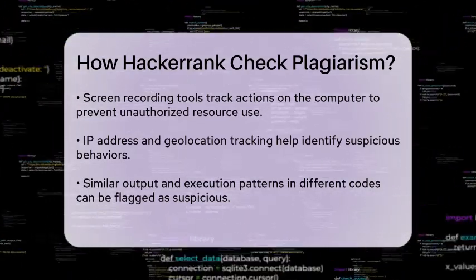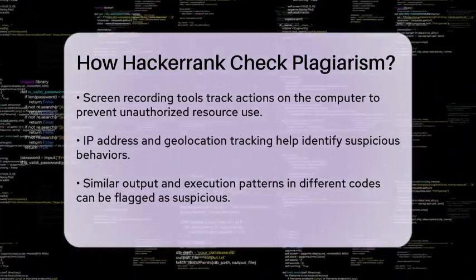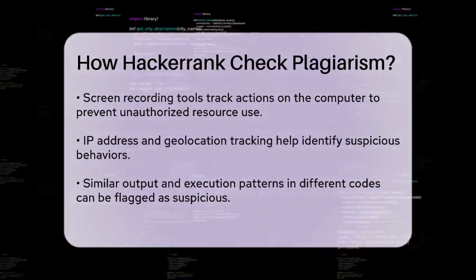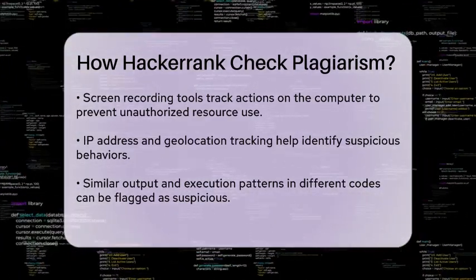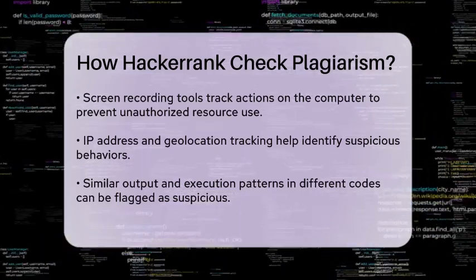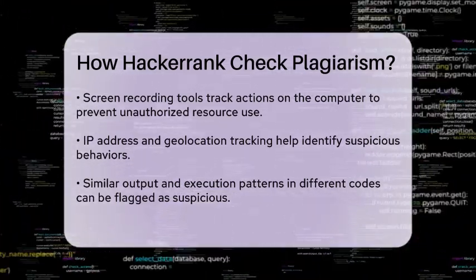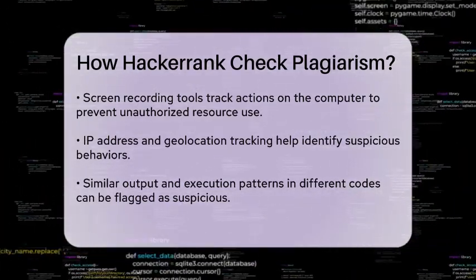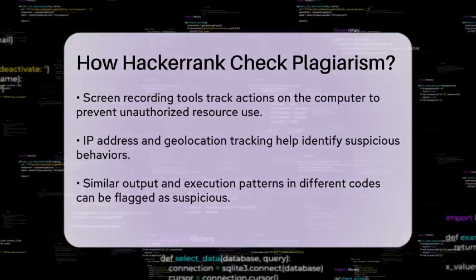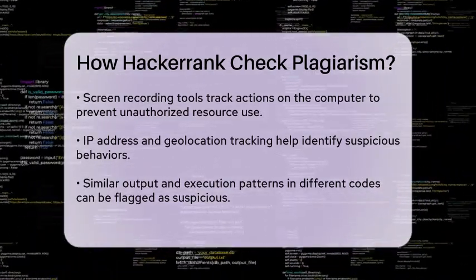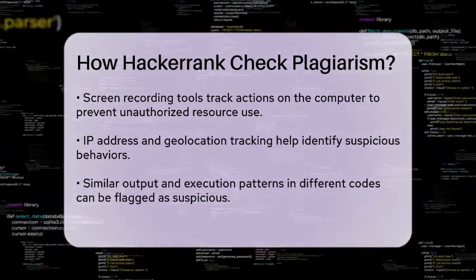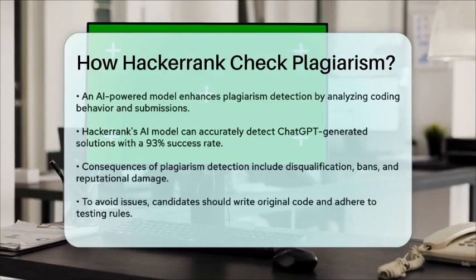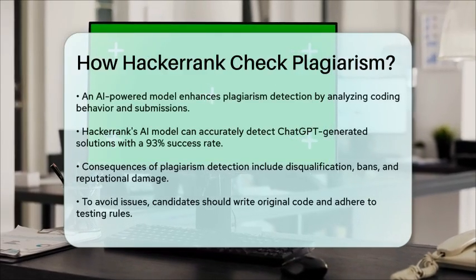HackerRank's plagiarism detection system is further enhanced by an AI-powered model. This model analyzes various signals, including coding behavior, attempt submission features, and question features, to detect plagiarism. It is designed to be more accurate than traditional methods like code similarity, which can be bypassed by tools like ChatGPT. HackerRank's AI model can detect ChatGPT-generated solutions with a high accuracy rate of 93%, even when those solutions are typed in manually and passed traditional checks.